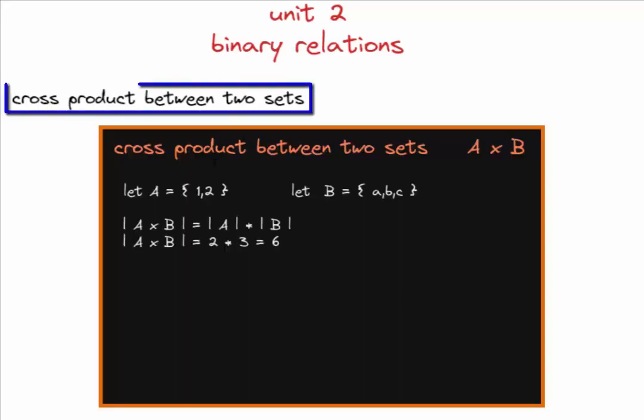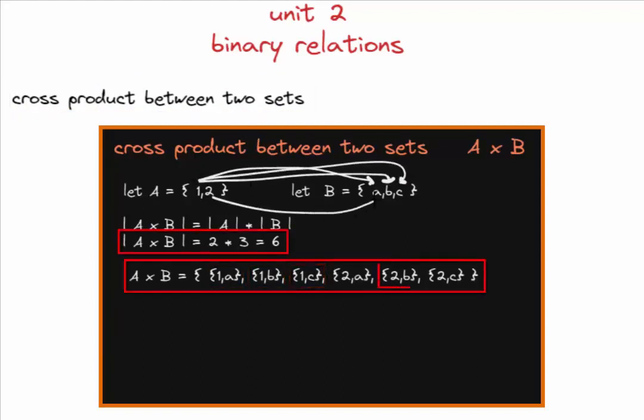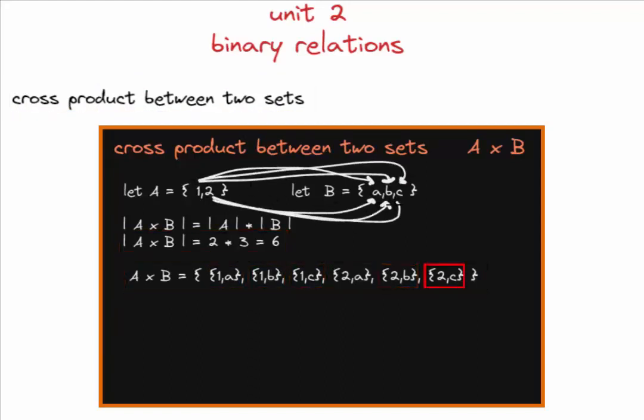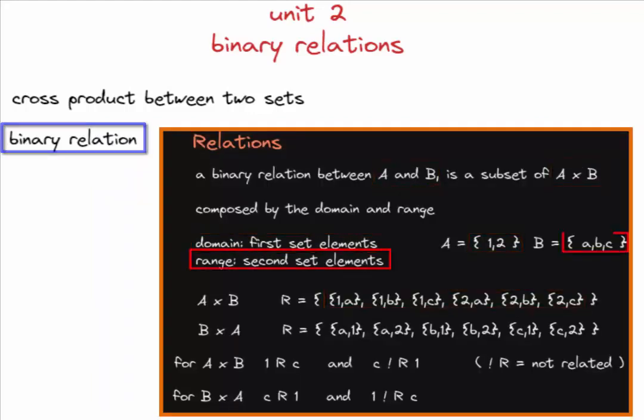A cross product is a non-commutative set operation between multiple sets that will result in a product set. We saw that a relation is every subset of that resulting set operation.